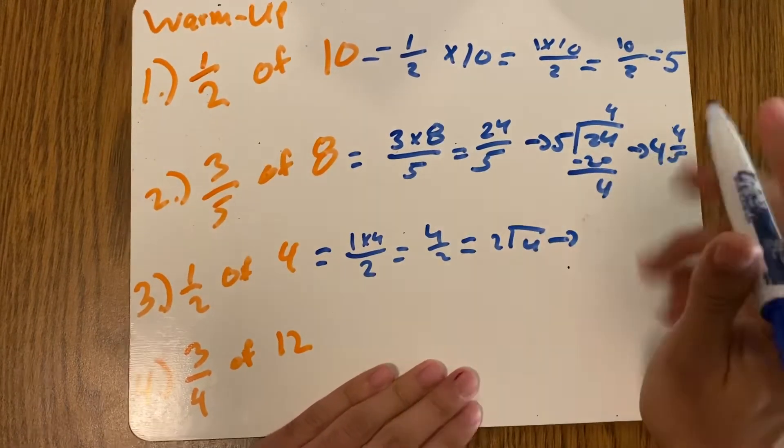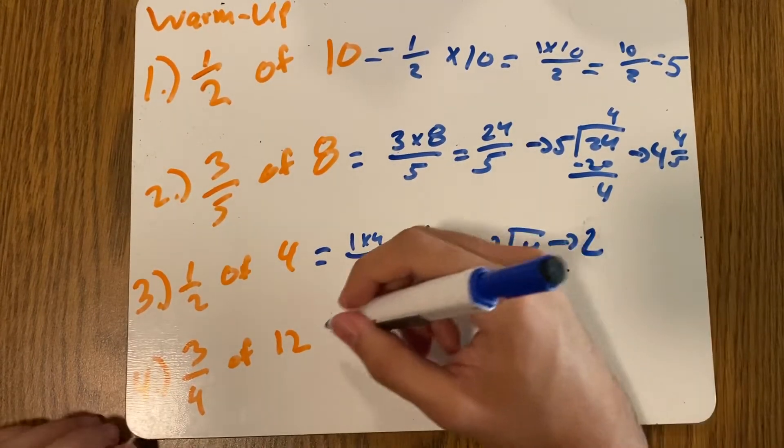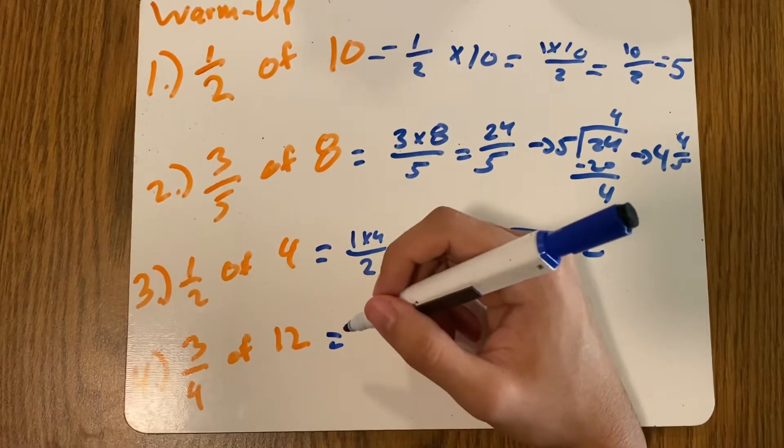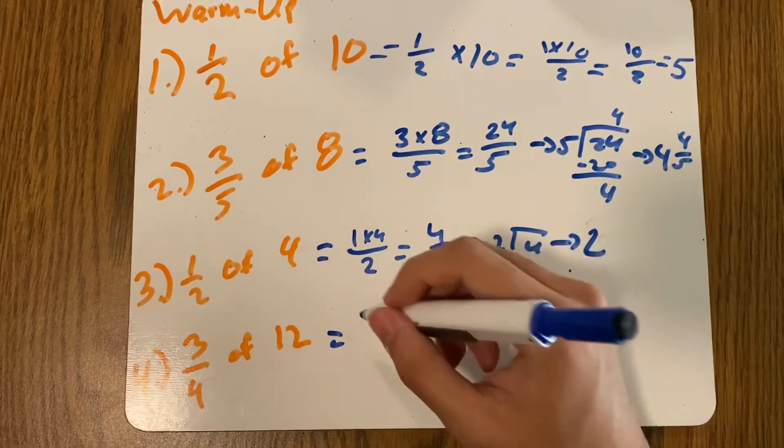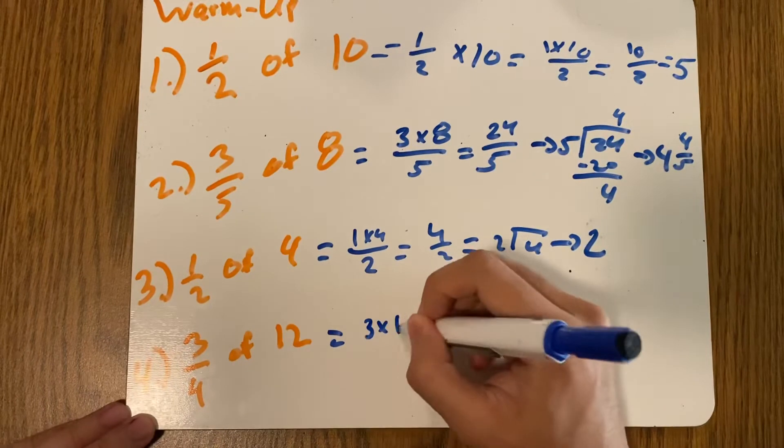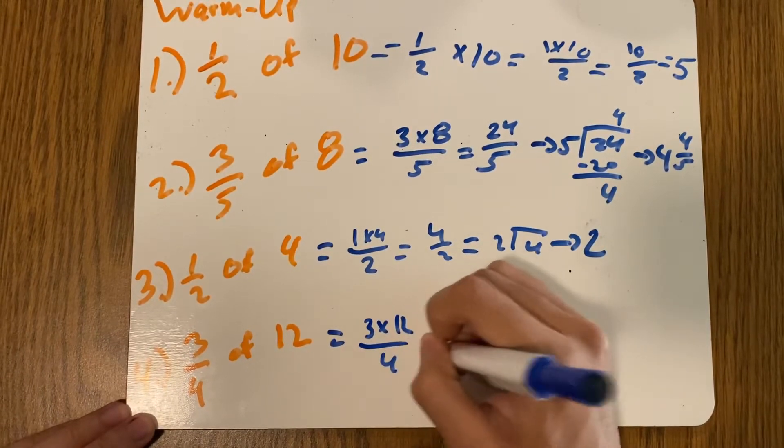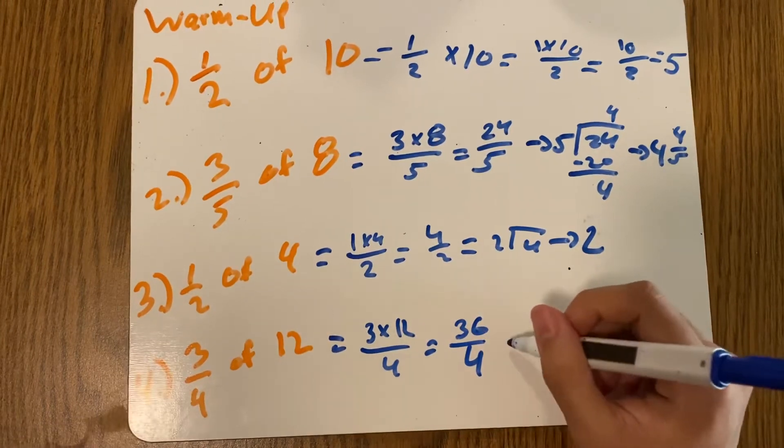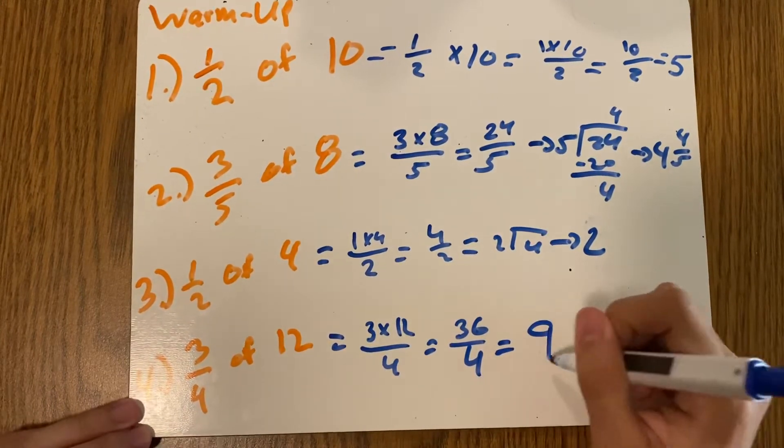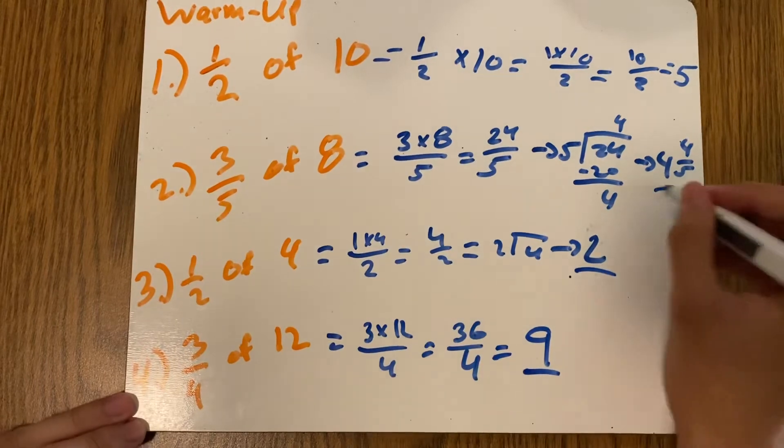Now everybody, if you're having trouble with these types of problems, I recommend that you go to our previous lessons from two weeks ago. Okay, now this one: three times 12 over four. Three times 12 is 36. 36 divided by four, and I already know that that is nine. Okay, so these are our answers.